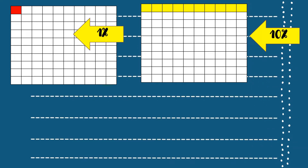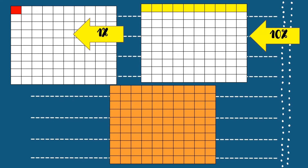Now, for our third figure or illustration, we have 100 shaded squares. So therefore, we have 100%. That's how easy it is to visualize percent.